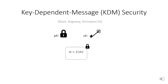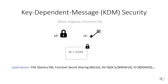This setting can appear a little artificial at first sight, but in fact it arises in many different settings. One example is fully homomorphic encryption, which uses Gentry's bootstrapping, where a homomorphic encryption encrypts its own secret key. But it's also used in many other places, such as function secret sharing, designated verifier non-interactive zero-knowledge proofs, or even in very recent IO constructions.